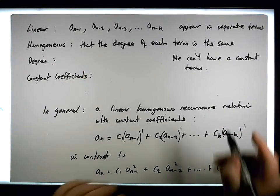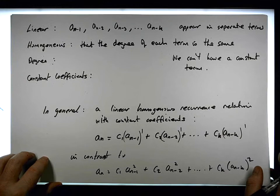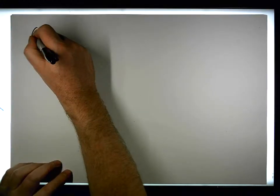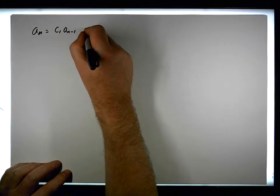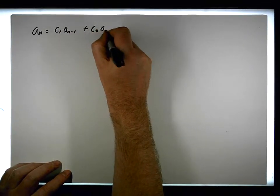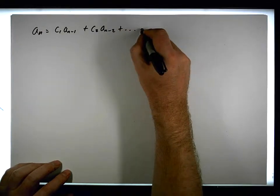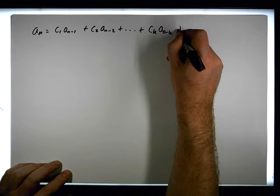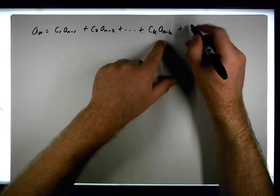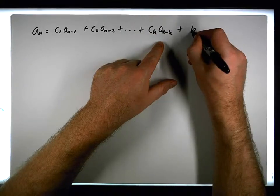So let's have a look. A constant term. So what happens with a constant term? So let's say we have something like a_n is equal to c1 times a_{n-1} plus c2 times a_{n-2} plus all the way down to the kth term, c_k times a_{n-k} plus some other constant. Let's say the constant is b.